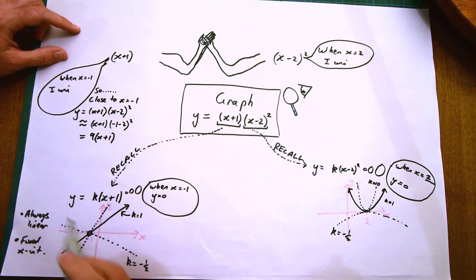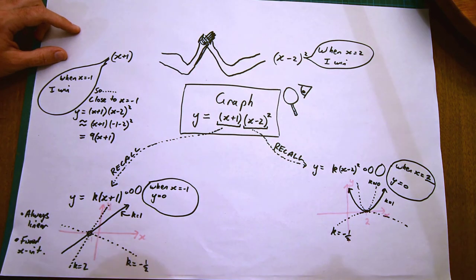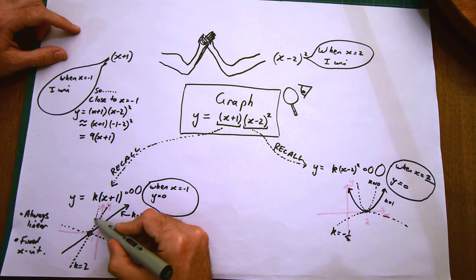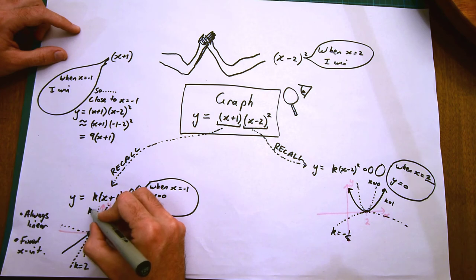If you substitute minus 1 in, you end up with minus 1 minus 2 all squared, which is 9, then we end up with y equals 9 times x plus 1—a very steep straight line crossing at x equals minus 1.